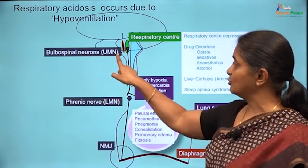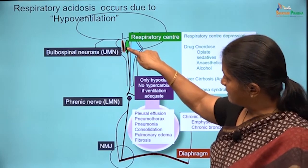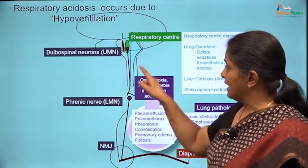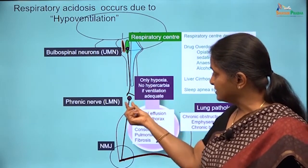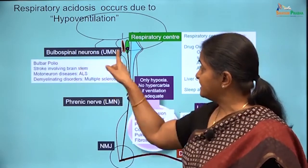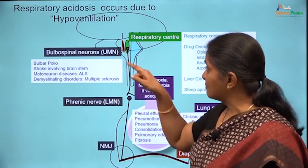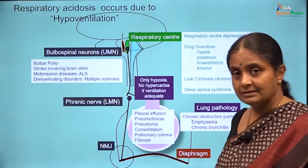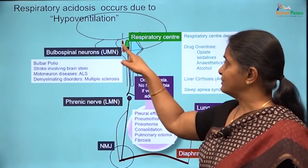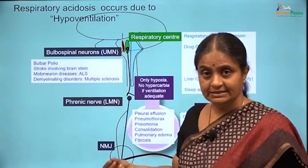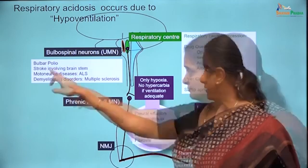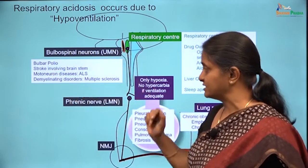Let us look at diseases affecting the upper motor neuron — the neurons going from the medulla oblongata to the spinal cord — the bulbospinal neurons which innervate the lower motor neurons supplying muscles of respiration. Polio has a predilection to motor neurons, and bulbar polio can result in cessation of ventilation. Stroke involving the brain stem — a cerebrovascular accident due to a thrombus, embolus, or bleed — can affect the respiratory center.